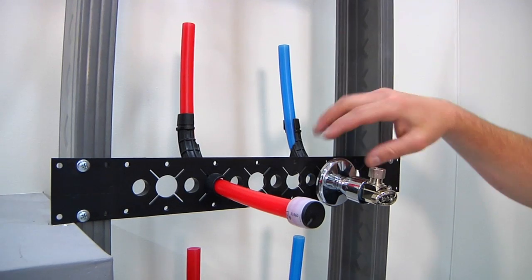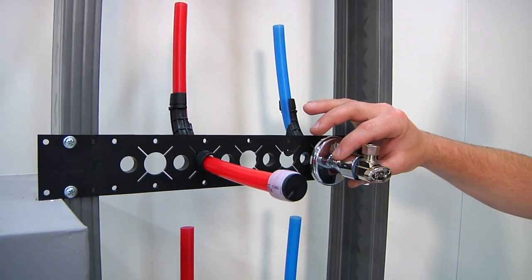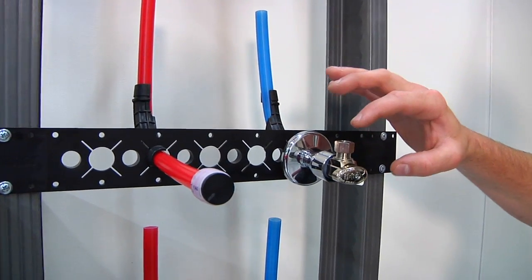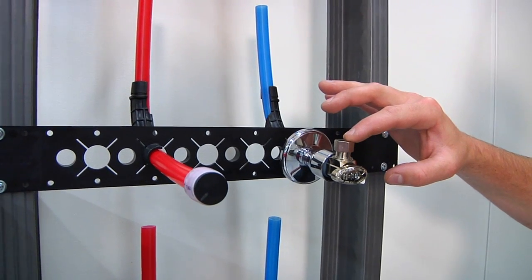Bend support snaps into the wall bracket and Uponor chrome escutcheon allows for the ProPEX expansion inside of that escutcheon, then using a lead-free ProPEX stop valve.